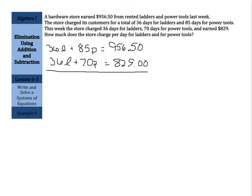Now, when determining whether or not to use addition or subtraction to eliminate here, if we added, nothing would eliminate. But if we subtracted, these L's eliminate. So then we have 85P minus 70P. Don't forget that you're subtracting there. That becomes 15P equals your 956 and 50 cents minus 829 is $127 and 50 cents.